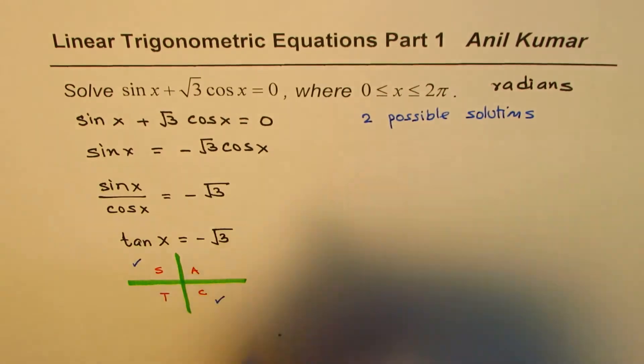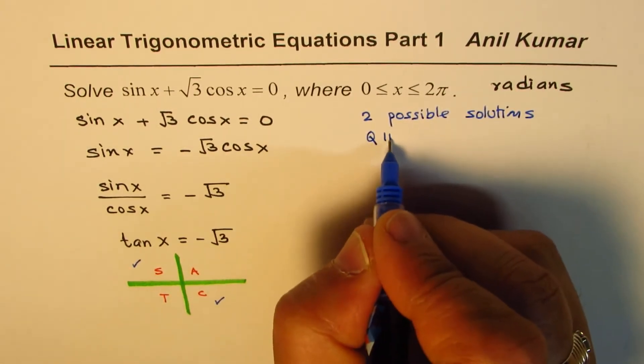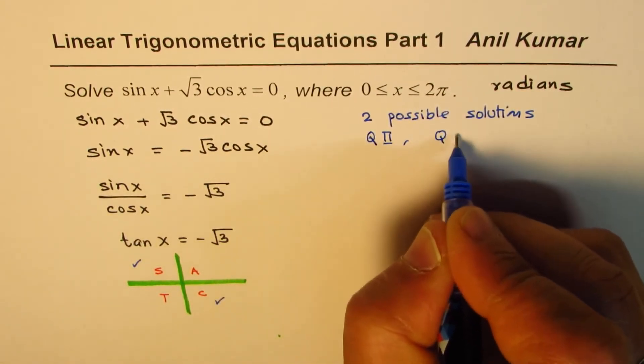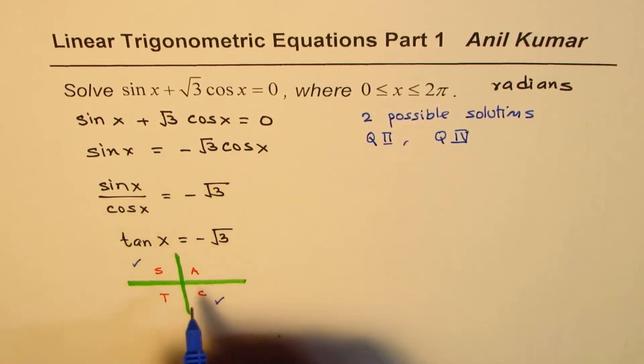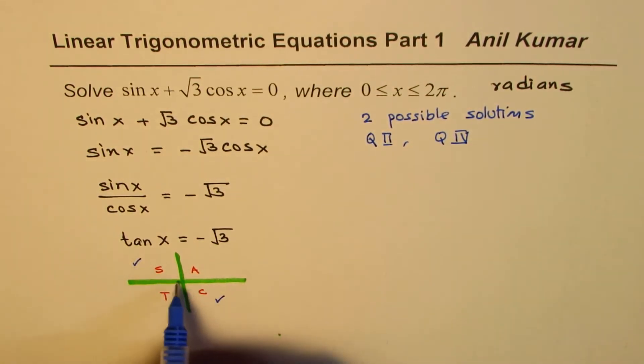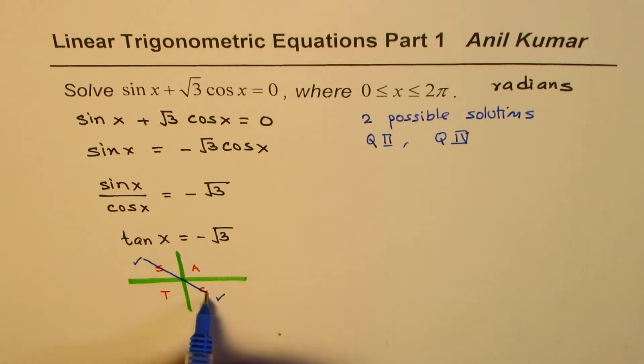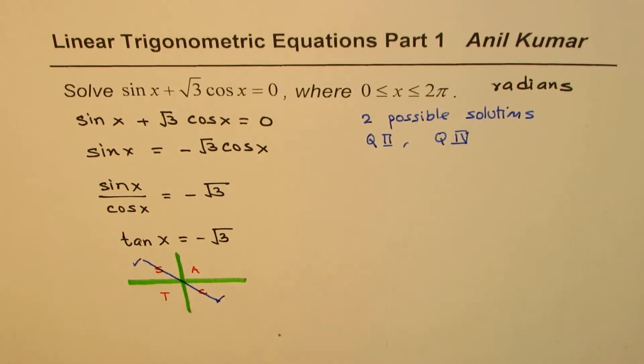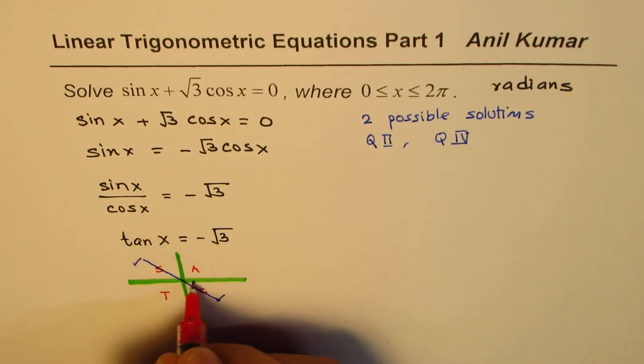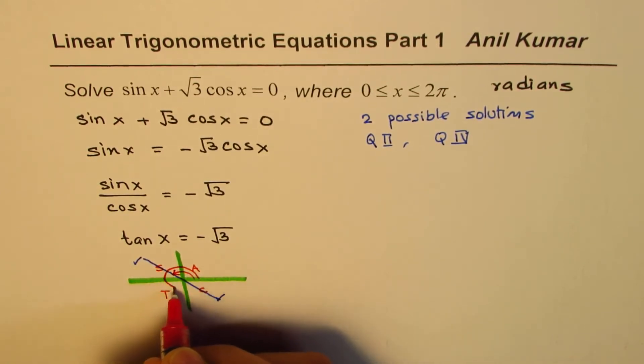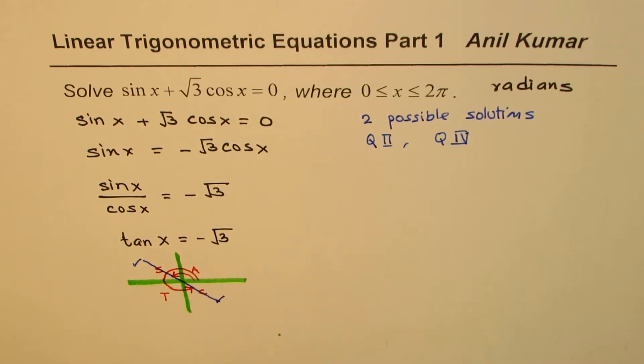And where do they lie? They lie in quadrant 2 and in quadrant 4. So we say there are two possible solutions which lie in quadrant 2 and 4. So I am just drawing this line to show you these two solutions. So value of one x will be this much, the value of other is this much. These are two possible solutions.